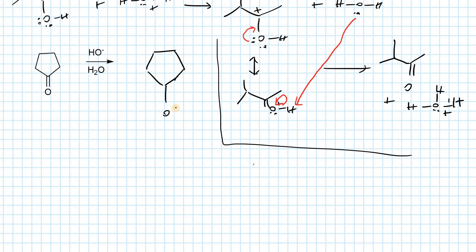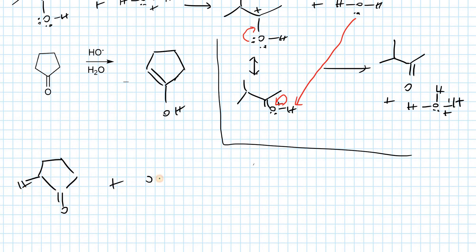The enol form has an OH group and a double bond here — this is the enol form. For the reaction mechanism, we have here an acidic proton. In the first step, hydroxide acts as a nucleophile and as a base, and what happens is we will deprotonate the alpha position of the ketone.